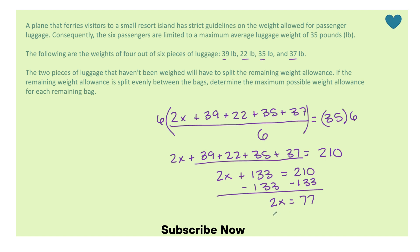Now it wants the remaining weight to be split evenly between the two bags. So I'm going to divide 77 divided by 2.